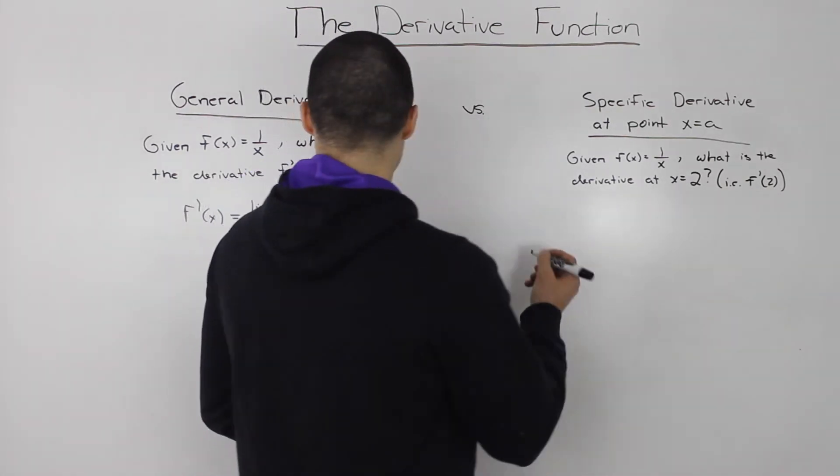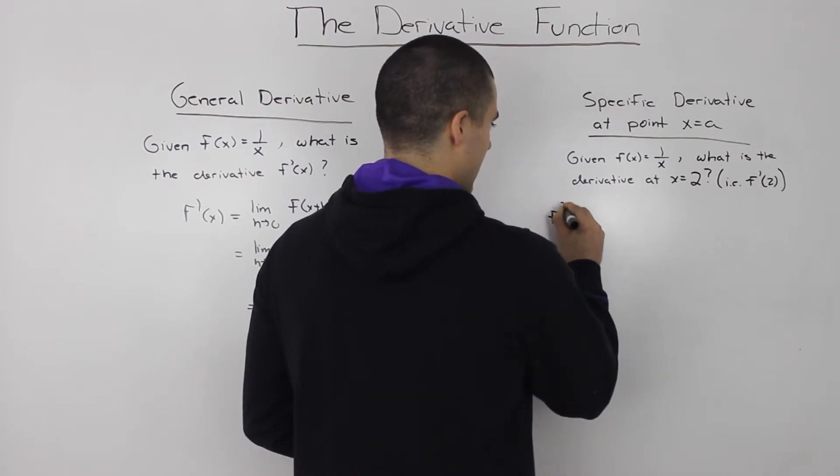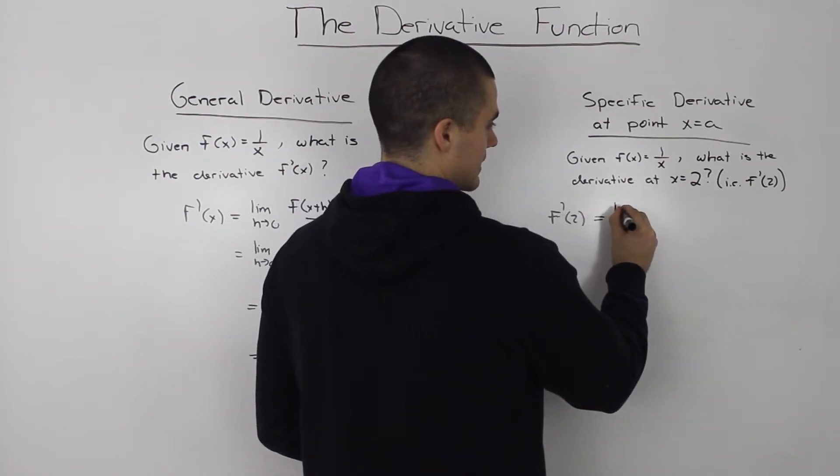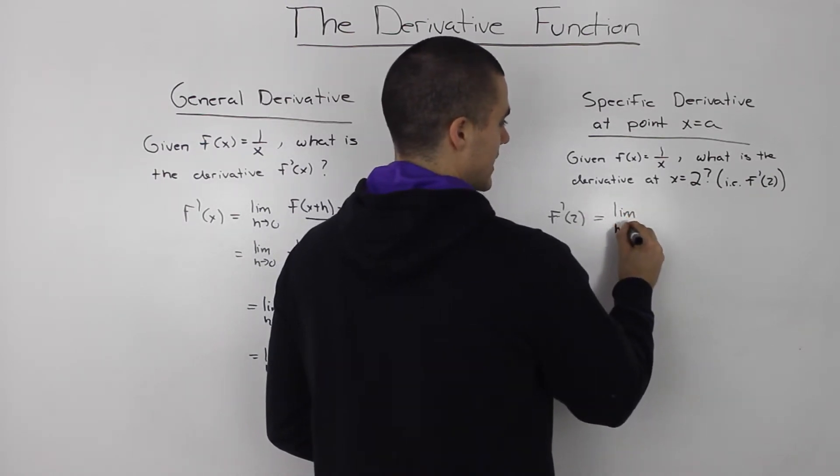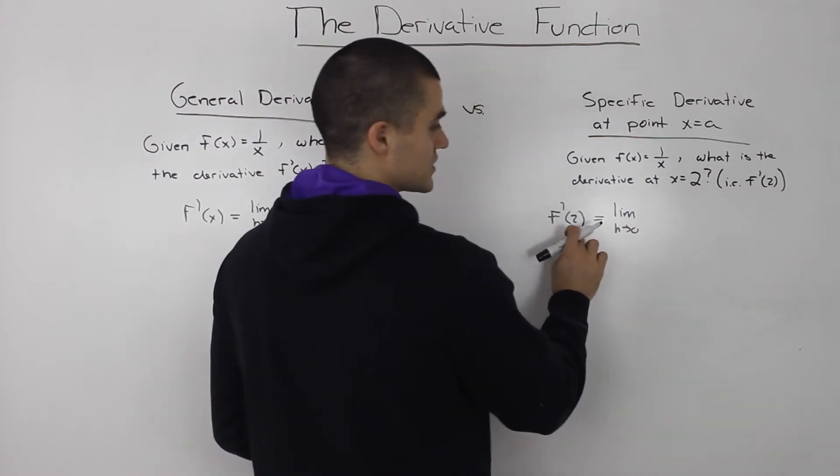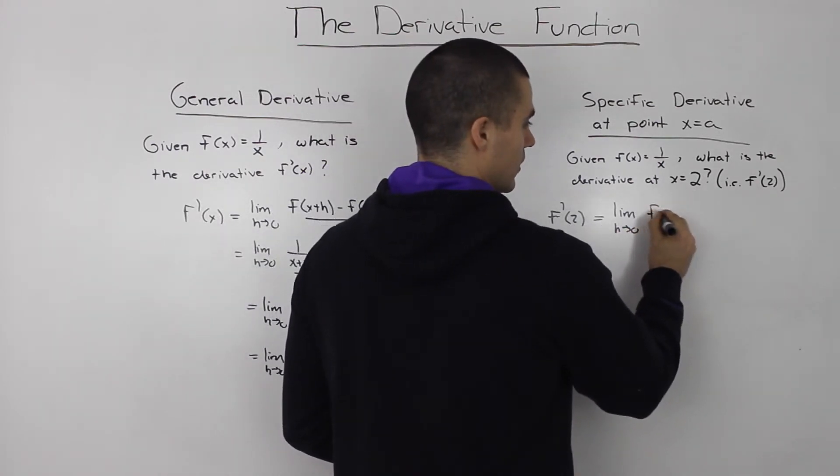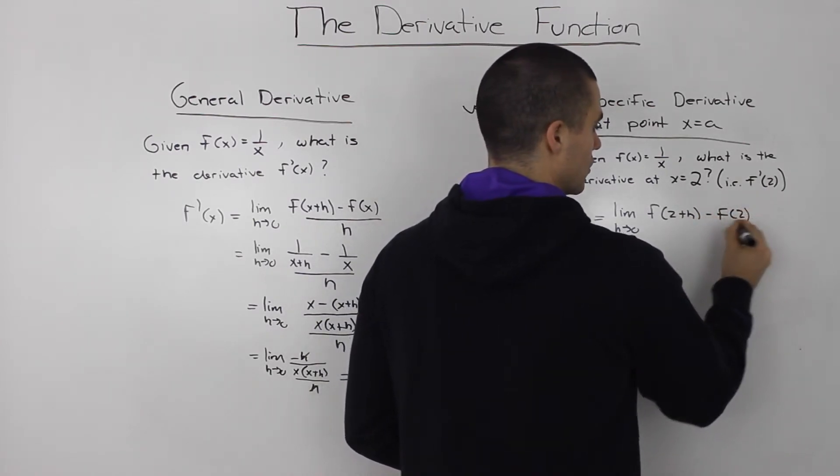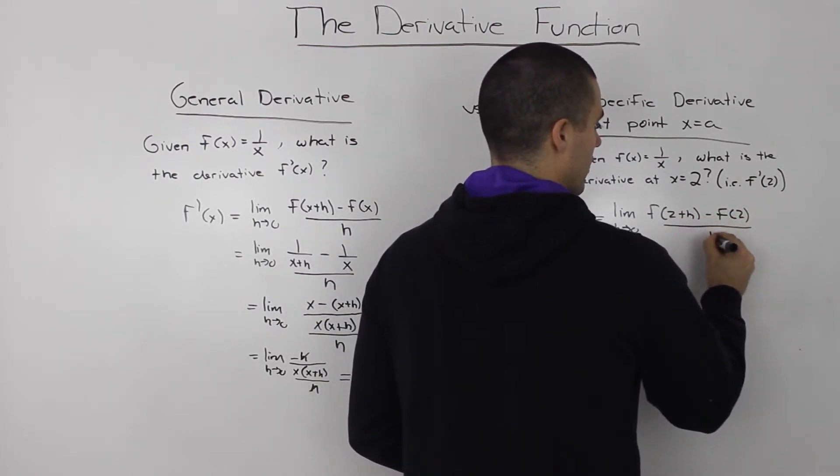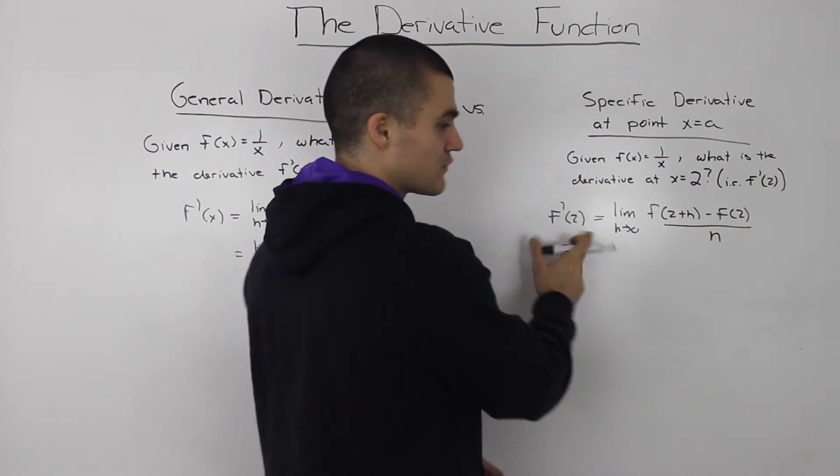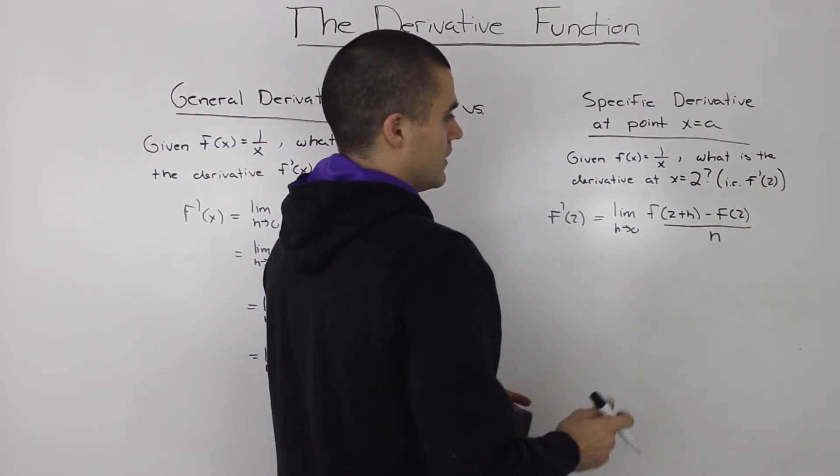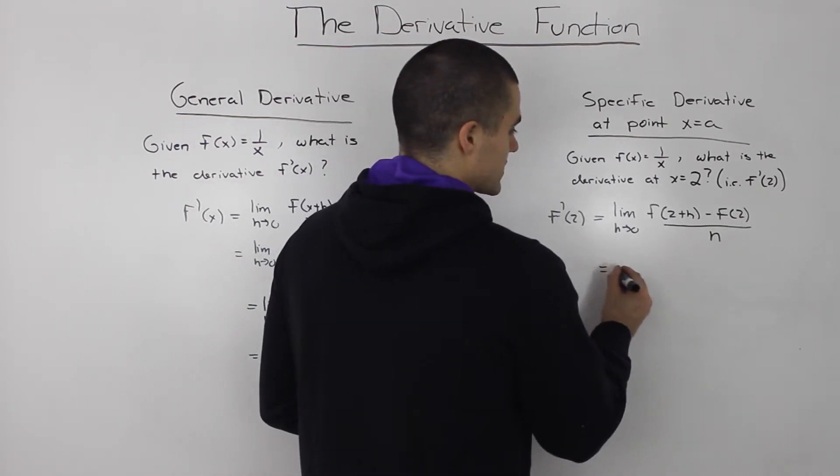So if we rewrite this, f prime of 2, that's the same as finding the limit as h goes to 0. Now since we're dealing with a specific point, we would put f of 2 plus h minus f of 2, all over h, because we're finding the derivative at 2, or the slope of the tangent at 2. So you can do all this algebra.